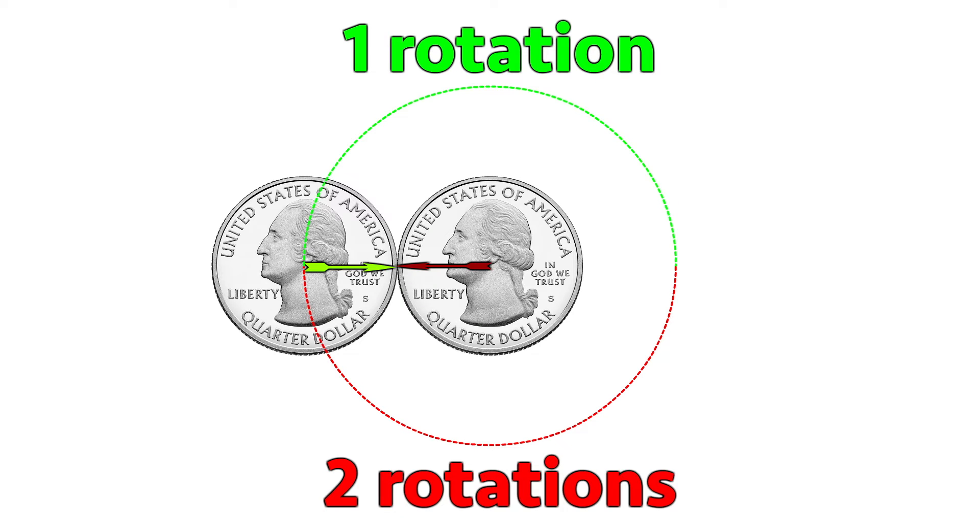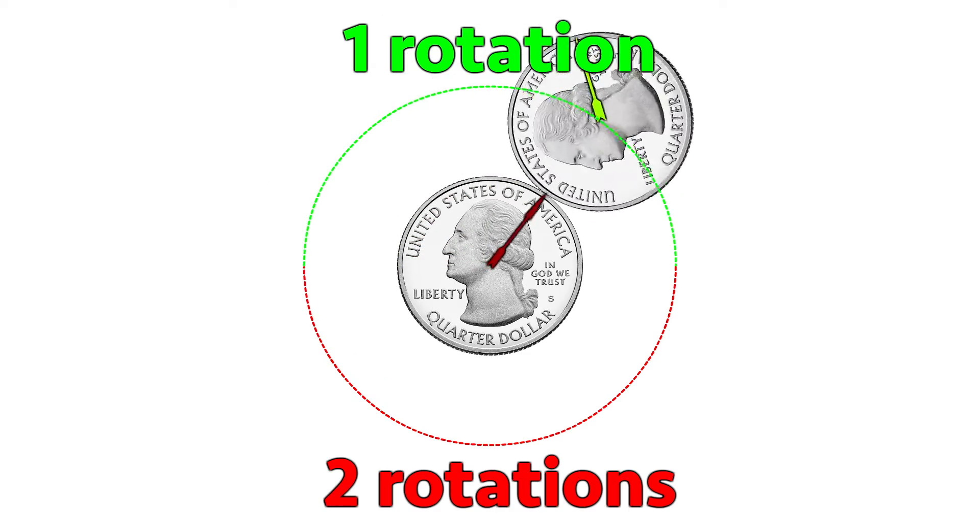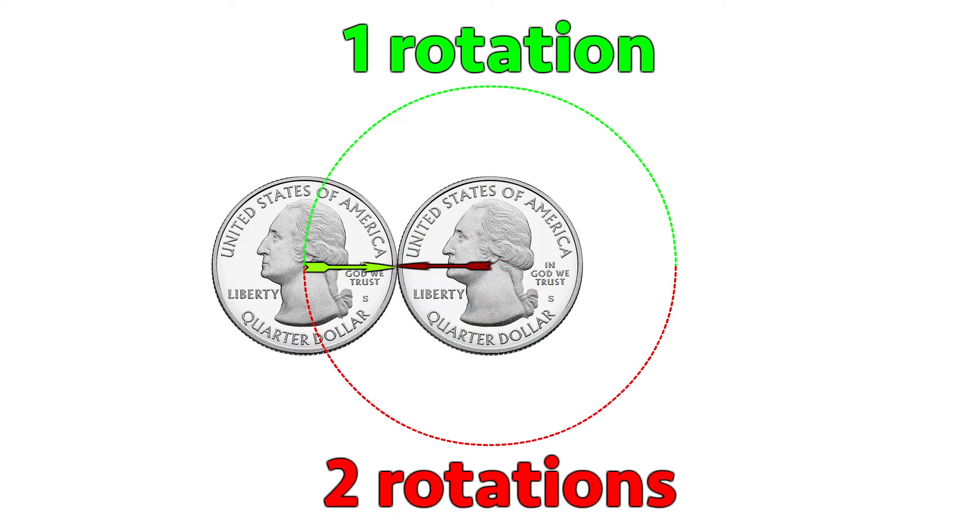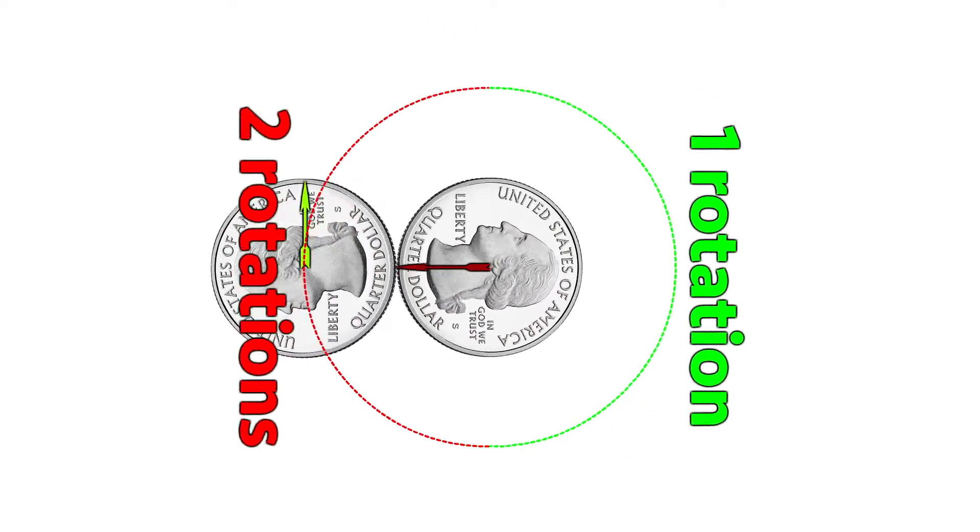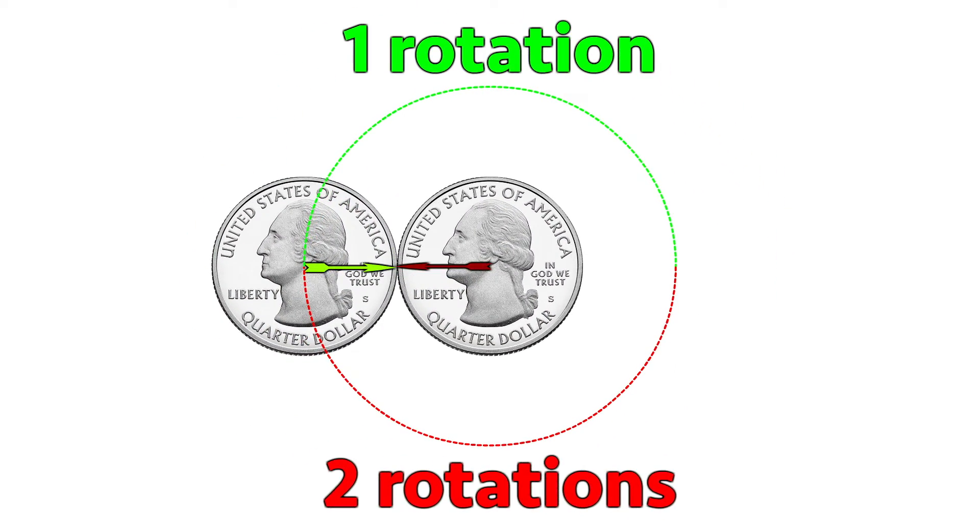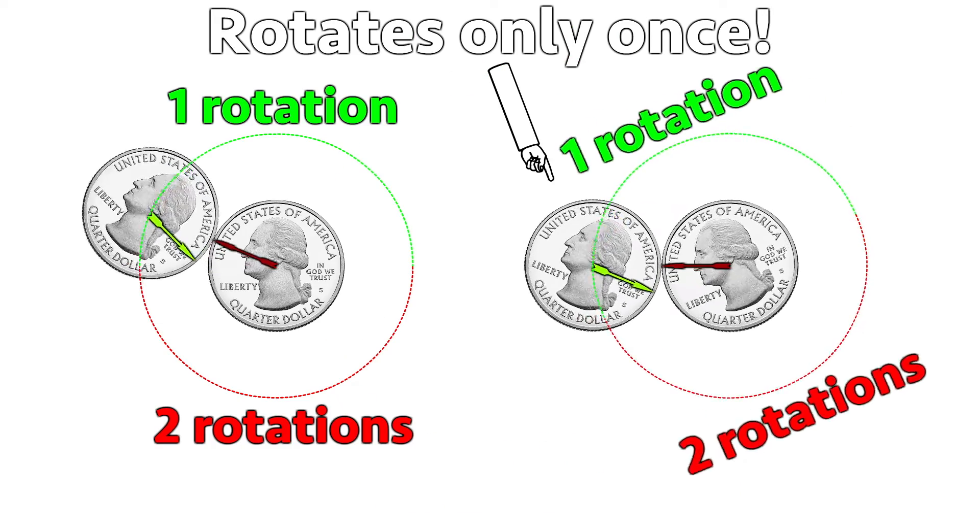Let's draw an arrow from the center coin pointing towards the rotating one. Now let's keep the red arrow still and from the point of view of the red arrow the coin rotates only once. These are the same animations but from different perspectives.